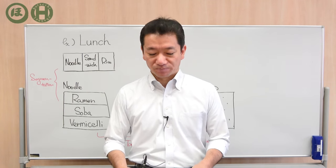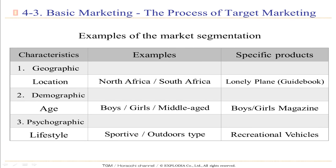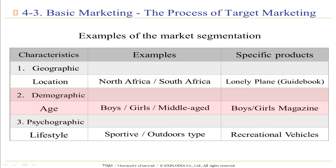Let's have a look at examples of market segmentation on slide number three. There are three categories: characteristics, examples, and specific products. The characteristics include geographic, demographic, and psychographic segmentation. For geographic segmentation, the example characteristic is location — for instance, North Africa or South Africa — and a specific product example would be the Lonely Planet guidebook, the world-famous guidebook.